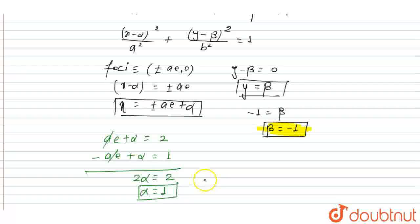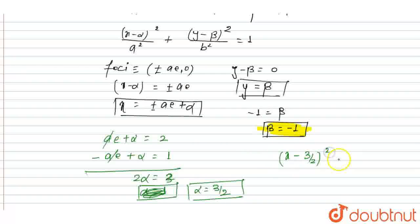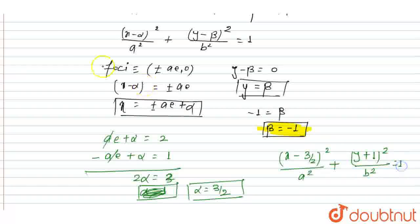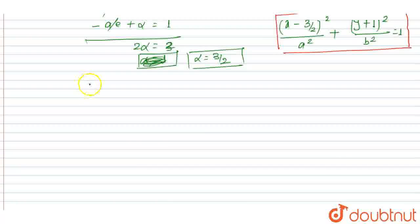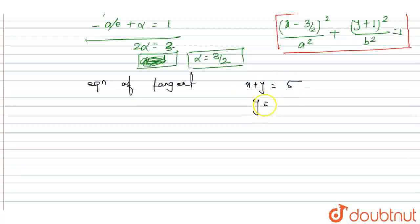Then the equation of the ellipse can be written as (x − 3/2)² / a² + (y + 1)² / b² = 1. The equation of the tangent given in this question is x + y = 5, which gives y = −x + 5.